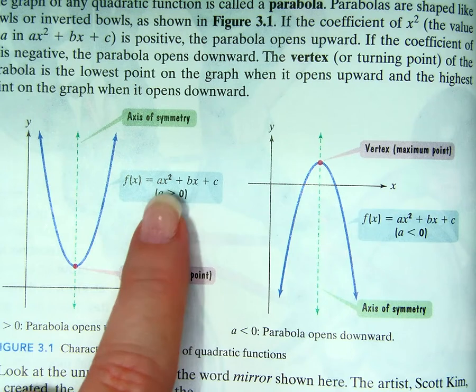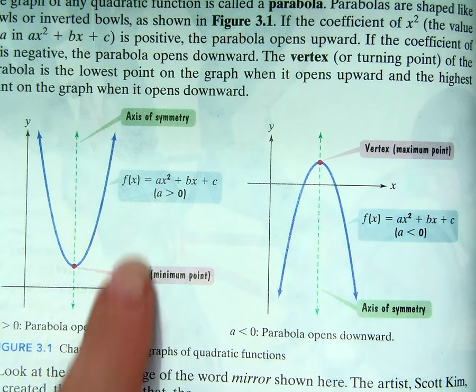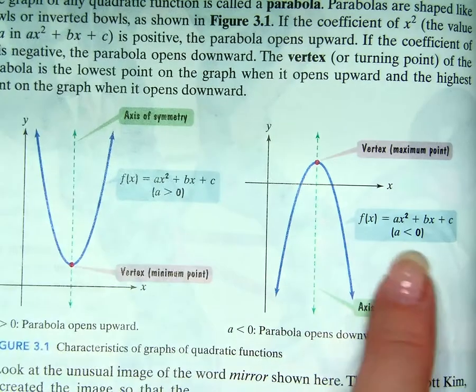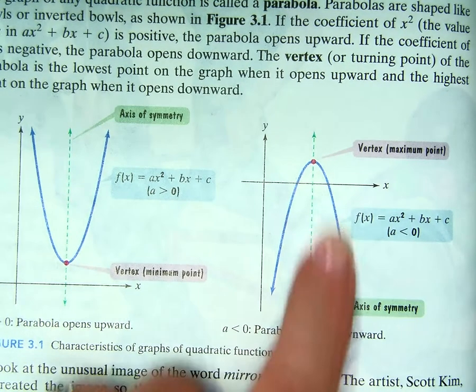Notice, please, that this one is saying that a is greater than zero, and how is this parabola opening? It's opening up. Notice this one is talking about when a is less than zero, and that's when it's opening down.